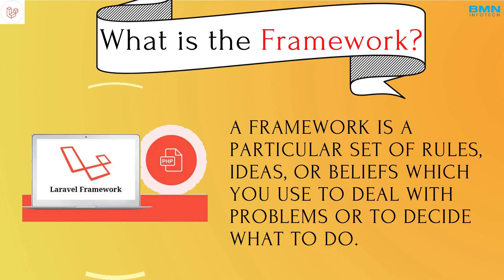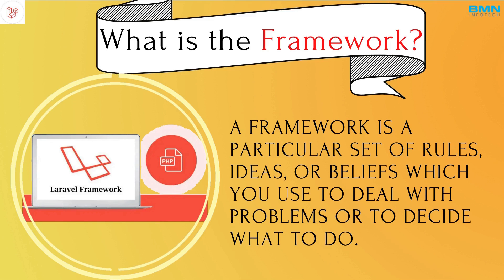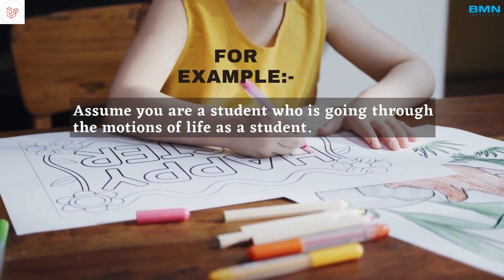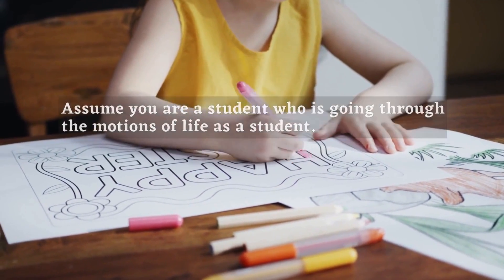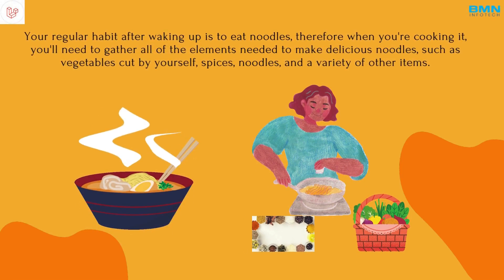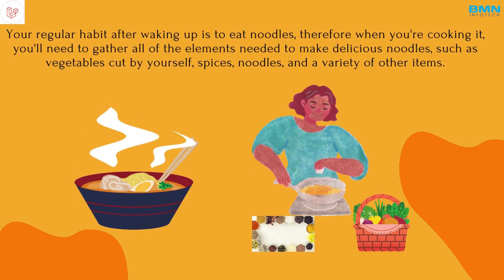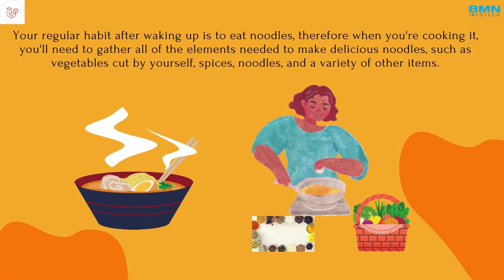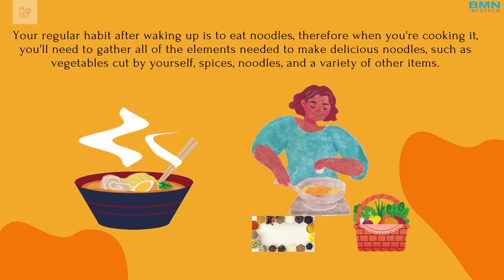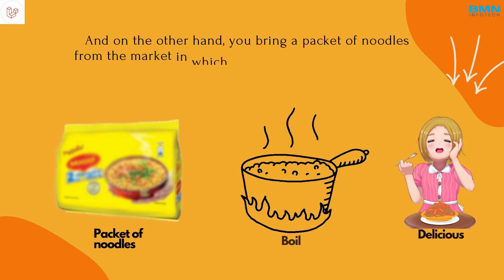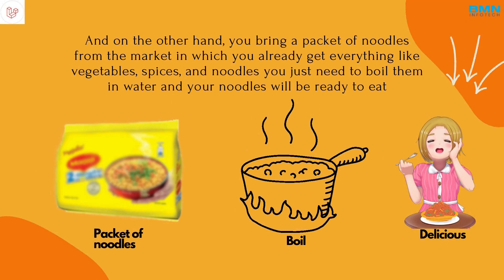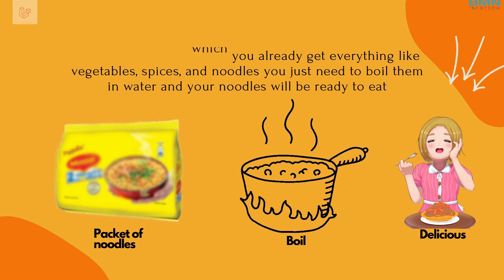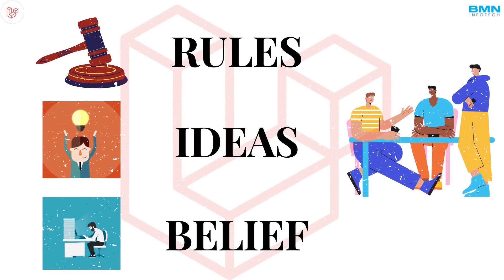For example, assume you are a student going through the motions of daily life. Your regular habit after waking up is to eat noodles. When cooking from scratch, you need to gather all the ingredients — vegetables cut by yourself, spices, noodles, and more. On the other hand, if you bring a packet of noodles from the market, you already get everything like vegetables, spices, and noodles included.